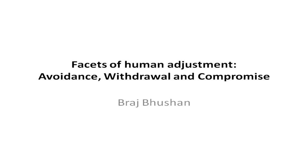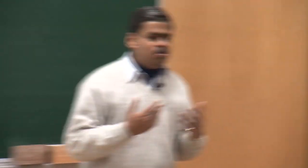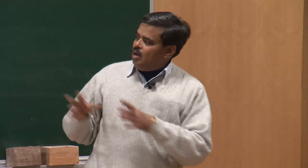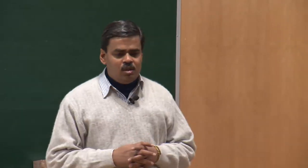Today we are going to begin our fifth module, where we would be talking about the facets of human adjustment. Our focus would be on avoidance, withdrawal and compromise — how these three techniques are used for better adjustment. If you remember, while we were looking at the task-oriented reaction patterns, we did talk about different types of possibilities that help us adjust, and we had deliberately left out avoidance, compromise and withdrawal, saying that we will talk about them at length.